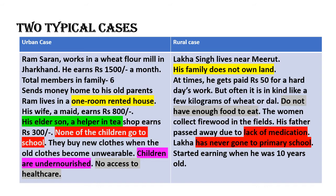In rural areas, there is a person called Laka Singh who lives near Miriti Nupi. His family does not own any land. At times he gets paid Rs. 50 for a hard day's work as an agricultural laborer, but often it is in kind — like a few kilograms of wheat or dal. He and his family don't have enough food to eat. Women collect firewood in the fields. His father passed away two years ago due to lack of medication. Laka has never even gone to primary school, and started earning when he was 10 years old. From both cases, we can see child labor, landlessness, homelessness, lack of healthcare, lack of education, and illiteracy. All these things lead to poverty, which is an issue faced not just by rural people but by urban people as well.